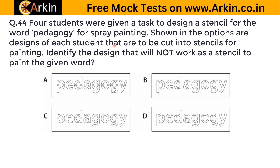Four students were given a task to design a stencil for the word 'pedagogy' for spray painting. Identify the design that will not work as a stencil. When using stencils, the inner parts of letters must be attached to the main body — otherwise they fall off. Checking each option: in option C, the inner part of the letter 'e' and the circular cutout are not attached to the main part, so they would fall out. In all other options the parts remain attached. Therefore option C will not work as a stencil. The correct answer is C.